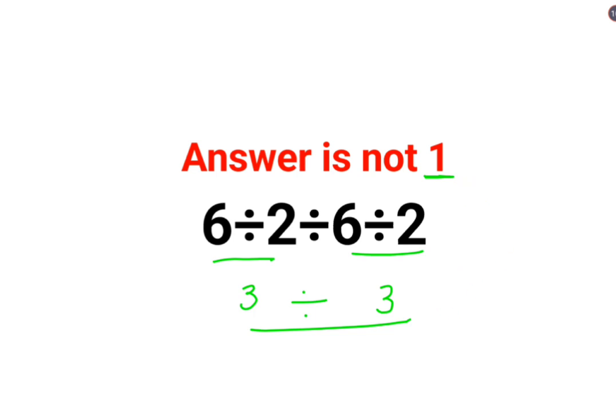But this is where a lot of people got it wrong. Please understand, whenever you have division or multiplication, you just have to go from left to right. You keep doing this operation from your left hand side to right hand side.